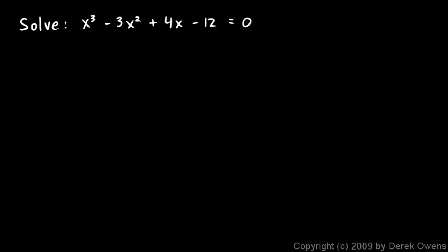Okay, in this problem we're given a third degree equation and we're told to solve it. And we're going to solve it by thinking of this as a polynomial that we factor. And we factor it by looking, by finding the zeros.